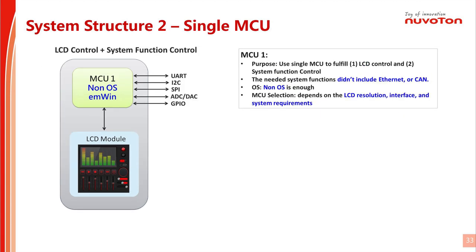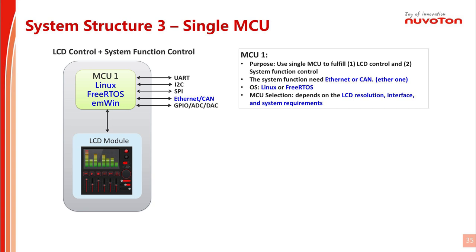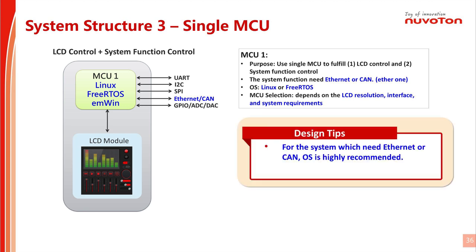System structure 2 uses only one microcontroller to fulfill both LCD control and system function control. Because this kind of system doesn't need Ethernet or CAN interface, there is no need for an operating system — bare metal is workable. System structure 3 also uses only one microcontroller, but compared to structure 2, this system needs Ethernet or CAN interface, so an operating system such as Linux or FreeRTOS is necessary.